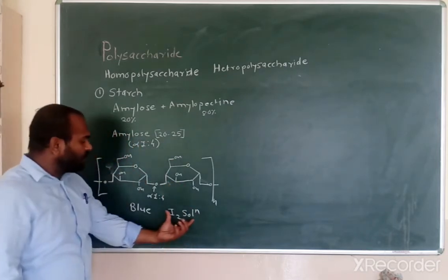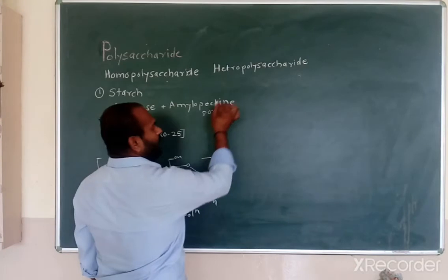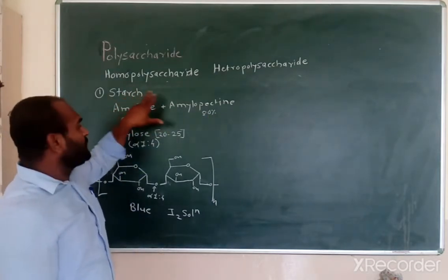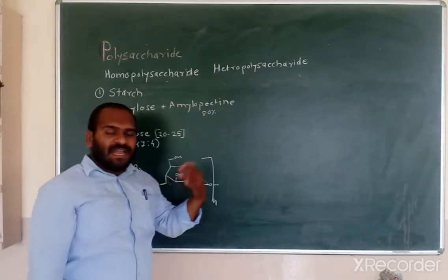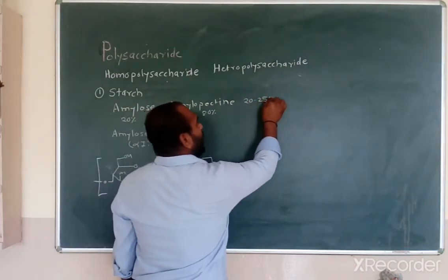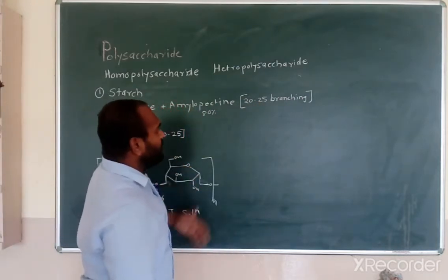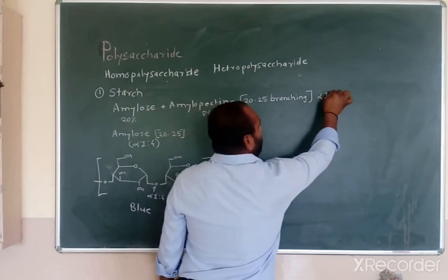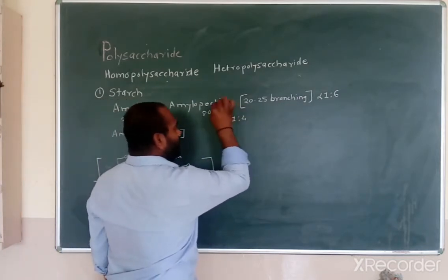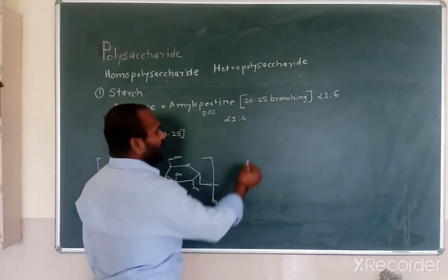Now let's consider the second component, amylopectin. Amylopectin makes up 80% of the starch component. It is a branched polysaccharide, and branching is observed after every 20 to 25 units. This branching occurs through alpha 1,6 linkage, while similar to amylose, the backbone has alpha 1,4 linkage.